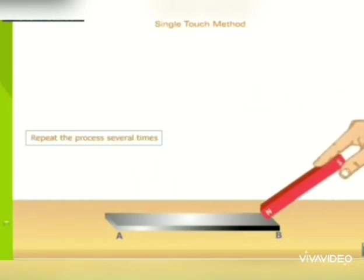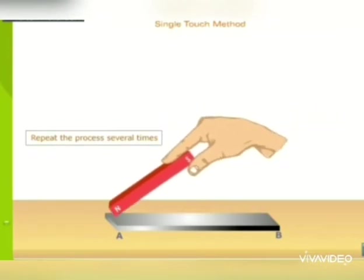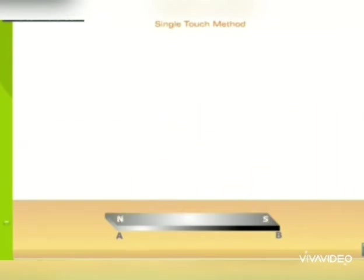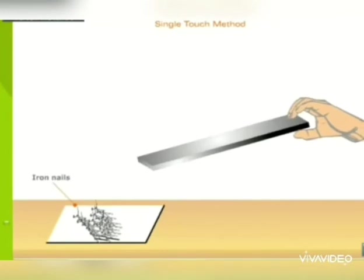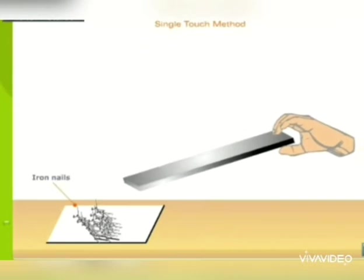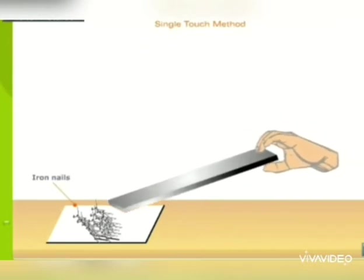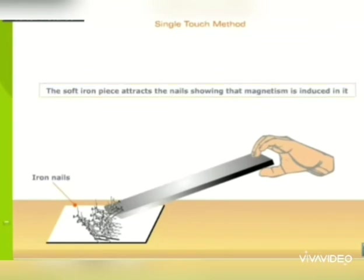The bar is tested by bringing it near some iron fillings. If the bar attracts the iron fillings, it shows that it has been magnetized. Thus, the iron bar becomes a magnet. Ab us iron bar ko iron fillings ke paas leke jana hoga. Agar iron fillings attract hota hai, iska matlab wo iron bar magnet ban chuka hai.